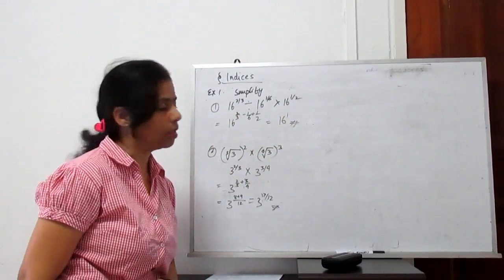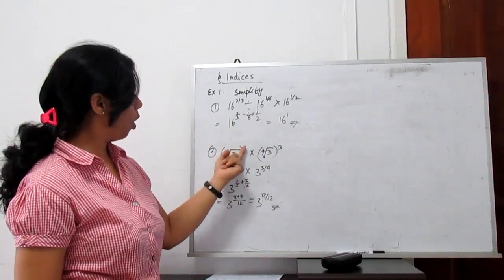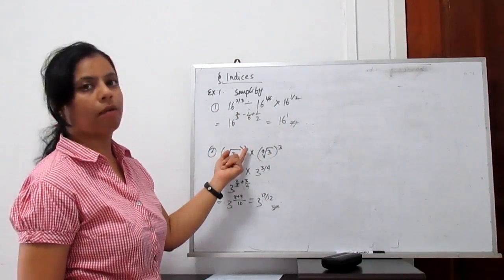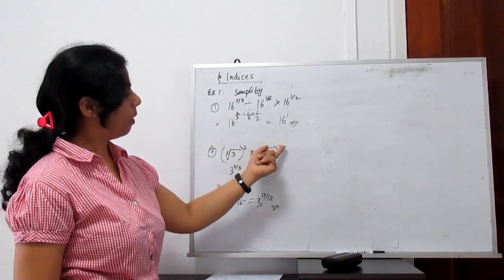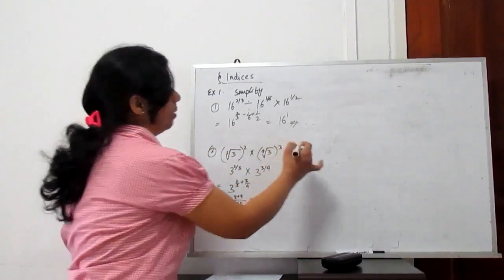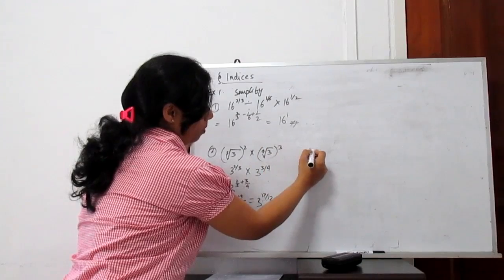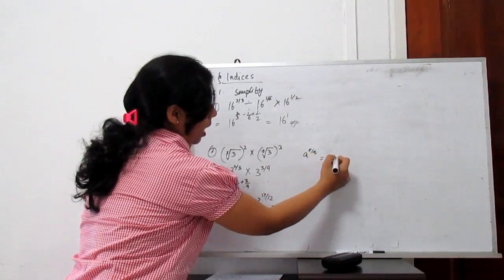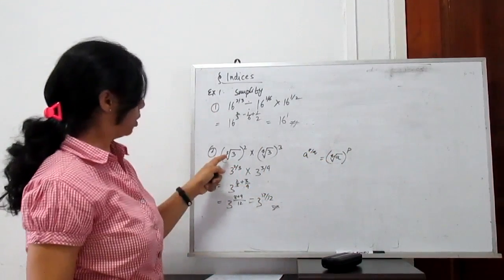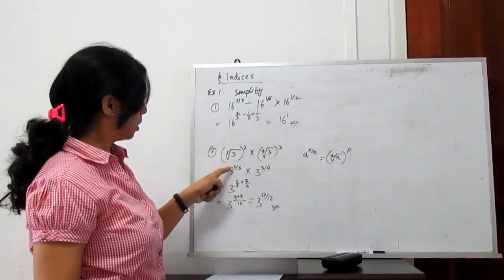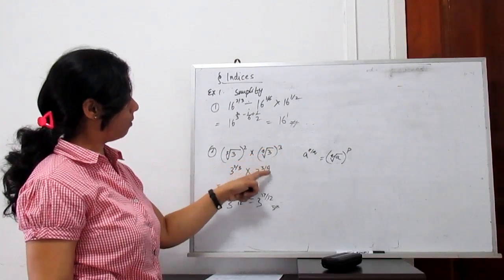Similarly, another example: the cube root of 3 squared times the 4th root of 3 cubed. Using the law that a to the power p by q equals the q-th root of a to the power p, this means 3 to the power 2 by 3 times 3 to the power 3 by 4.